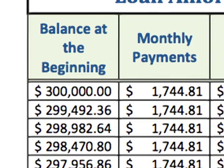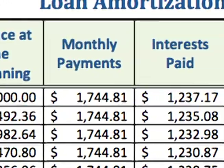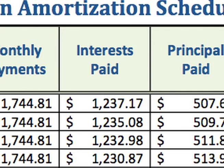Third, you enter the interest paid, which you find by multiplying the balance at the beginning by the periodic monthly rate of 0.4123915%. In this case, that gives you $1,237.17 for the first period.